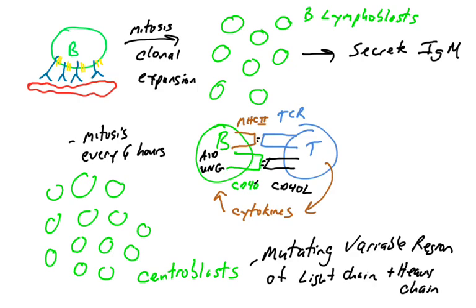You've got these cells, these centroblasts, and each one of them is turning on AID and UNG. Each one of them is probably mutating a different cytosine, mutating a different nucleotide and a different codon and therefore a different amino acid. This is occurring in the centroblasts. There's lots of mitosis, but now each one of them is slightly different from another because each one of them have mutated probably a different cytosine in the variable region of the light and heavy chain.